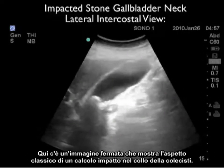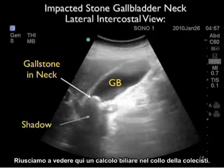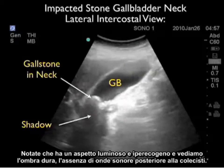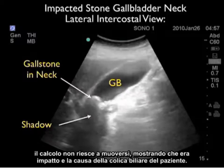Here's a still image showing the classic appearance of an impacted stone at the gallbladder neck. Looking through the lateral intercostal view, we get a nice long axis view of the gallbladder, with a gallstone located within the neck showing the classic bright or hyperechoic appearance and a hard posterior shadow — a blackout of sound waves. Interestingly, as we rolled the patient around, the gallstone failed to move, confirming it was impacted and the cause of the patient's biliary colic.